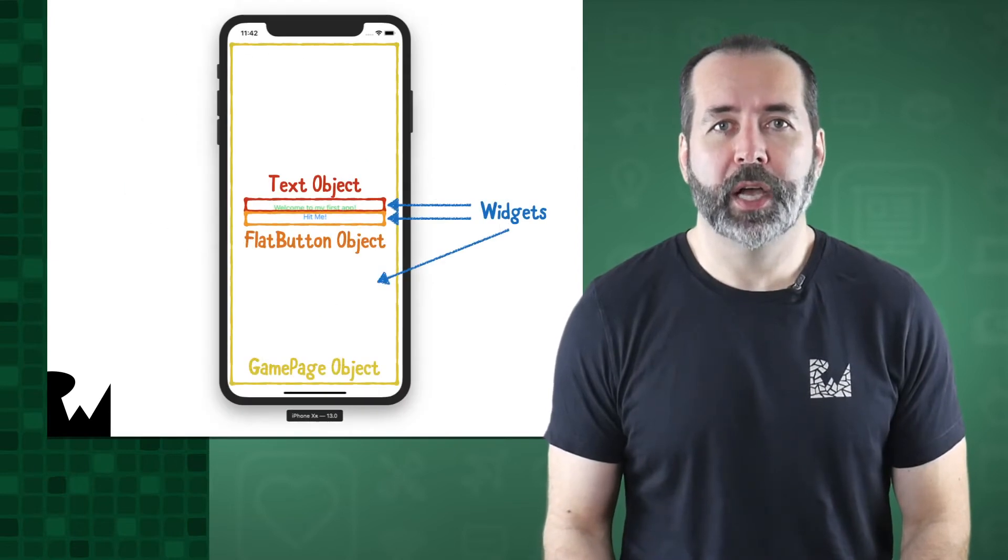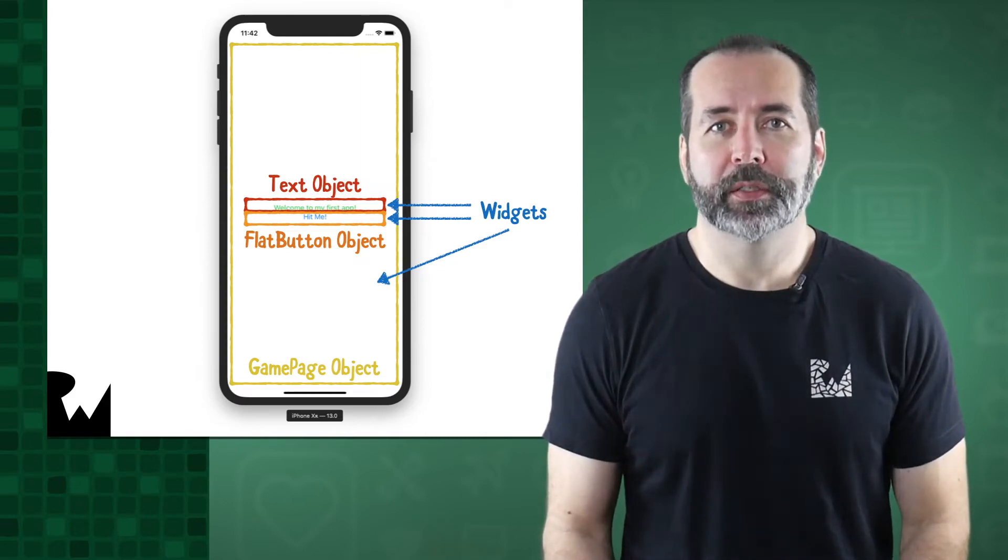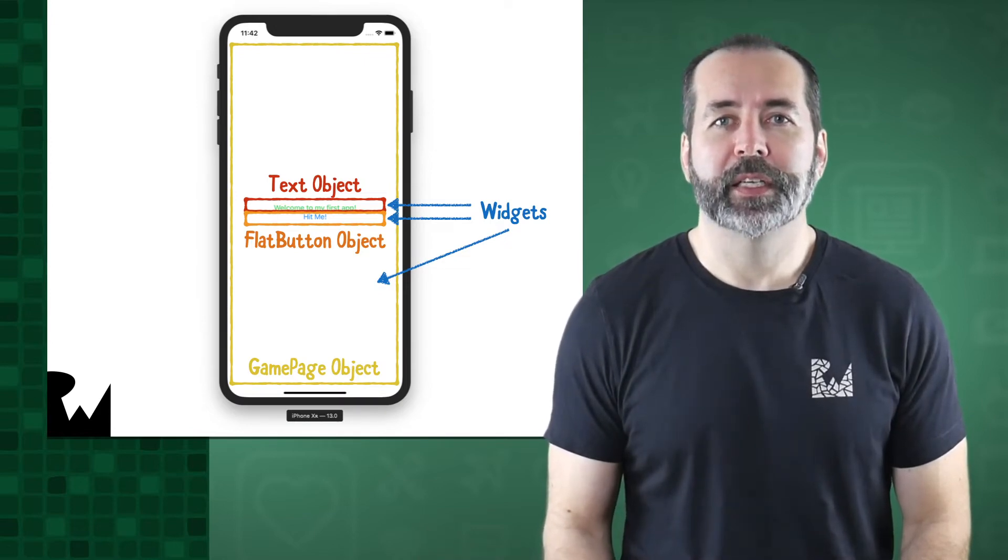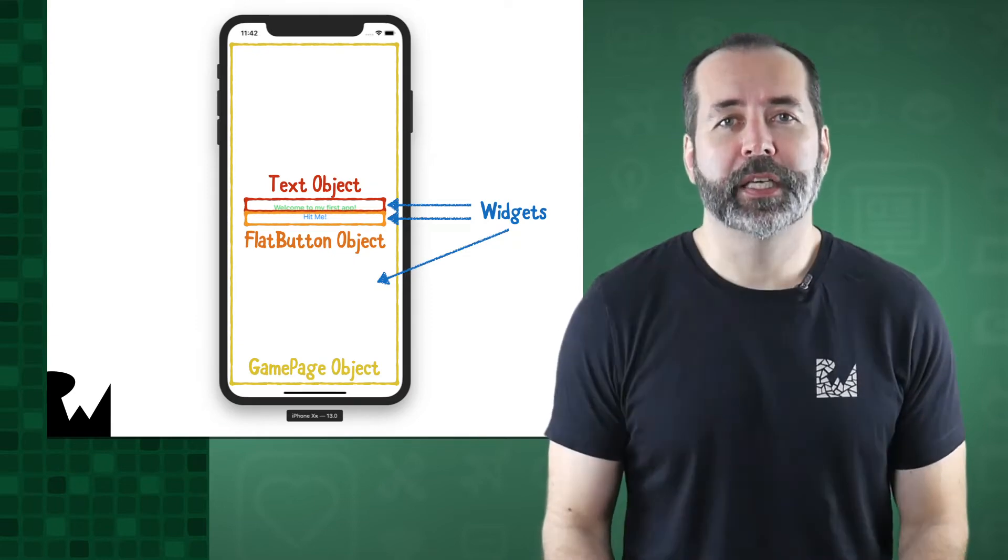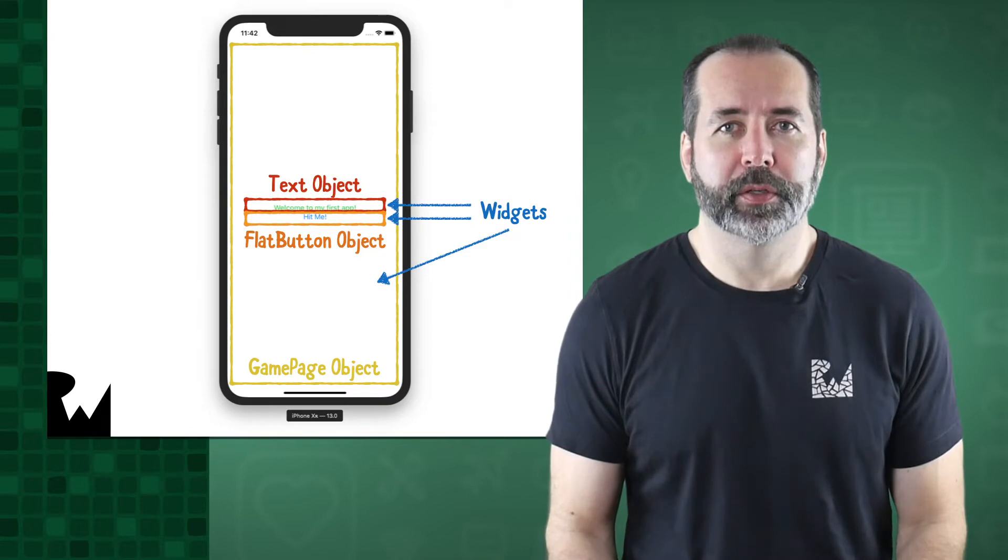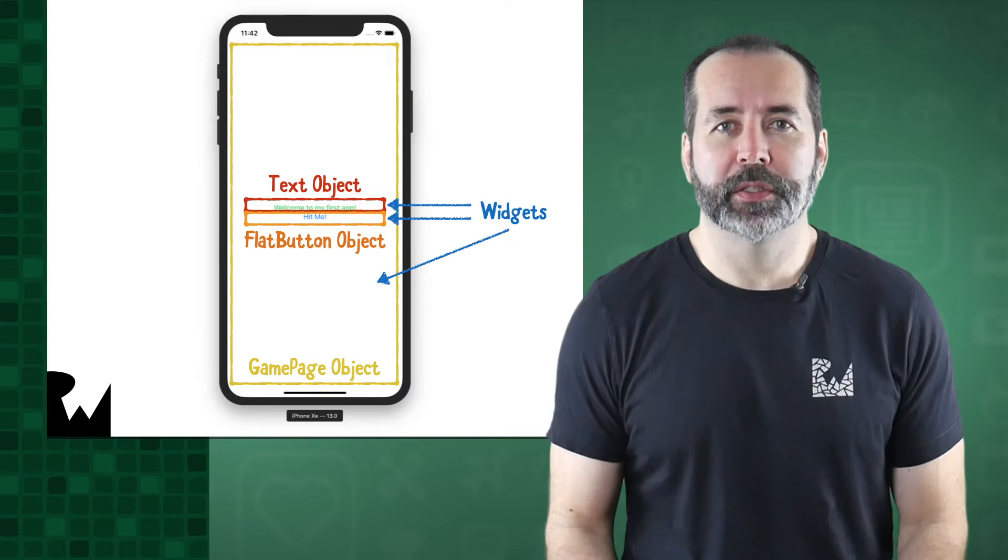The object you've spent the most time with so far is GamePage, which you can think of as the main screen of your app. The hit me button is also an object, as is the welcome to my first app text widget. In fact, even the text value that you put on the button, hit me, is also an object. Keep in mind that in Flutter, most of the objects you work with are types of widgets. You can kind of use the terms interchangeably in Flutter. But in object-oriented programming, an object really means an instance of a class, whereas widget is a Flutter-specific term for user interface objects.